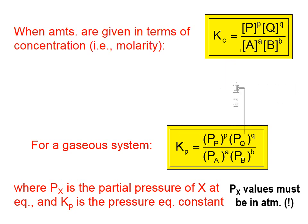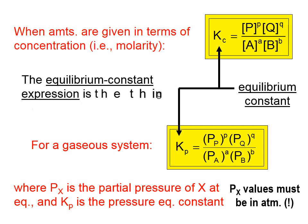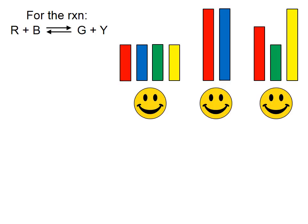So just keep that in mind. So to review, any K value is called an equilibrium constant, and the equilibrium constant expression is the thing in the yellow double box. Let's go back to this sort of idea that we talked about earlier in this lesson. Red and blue reacting to form green and yellow.